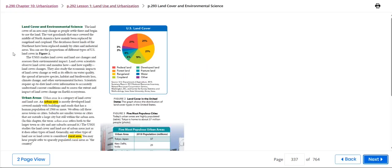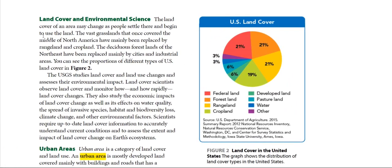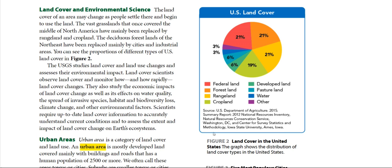Moving to land cover in environmental science: the land cover of an area may change as people settle there and begin to use the land. The vast grasslands that once covered the middle of North America have mainly been replaced by rangeland and cropland.